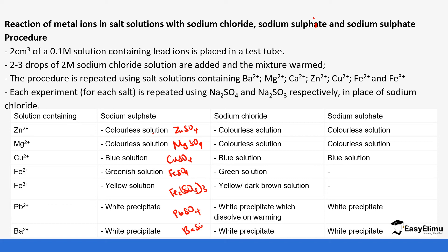Lead sulfate is insoluble. For sodium chloride: zinc chloride is soluble, magnesium chloride is soluble, copper(II) chloride is soluble, iron(II) chloride is soluble, and iron(III) chloride is soluble. But with lead and barium, there is an exception — lead chloride forms a white precipitate but will dissolve on warming, which is unique. Barium chloride also forms a white precipitate.